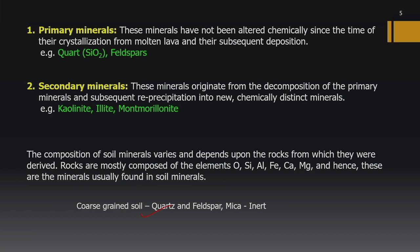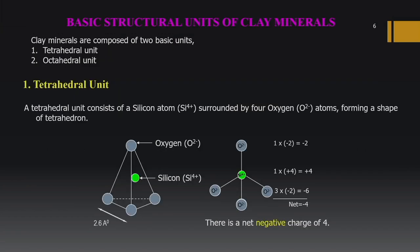The composition of soil minerals varies depending on the rocks from which they are derived. Since rocks are mostly composed of oxygen, silicon, and aluminum, these elements are usually found in soil minerals. Clay minerals have two basic units: the tetrahedral unit and the octahedral unit. In the tetrahedral unit, there are four oxygen atoms occupying the four apex positions and one silicon atom at the center.